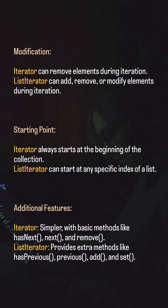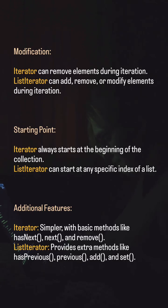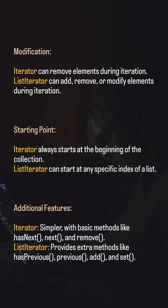Additional features: iterator is simpler, with basic methods like hasNext(), next(), and remove(). List iterator provides extra methods like hasPrevious(), previous(), add(), and set().